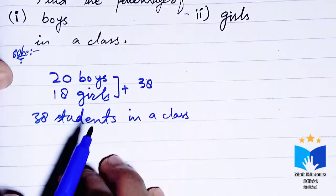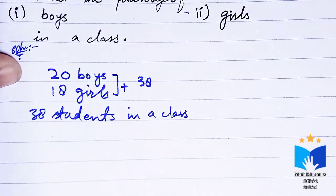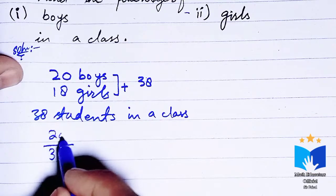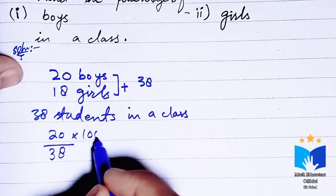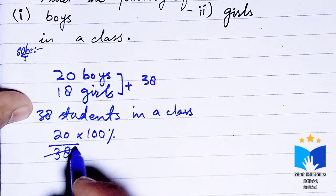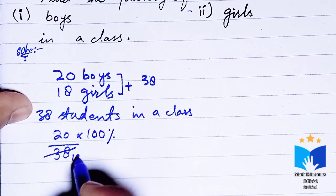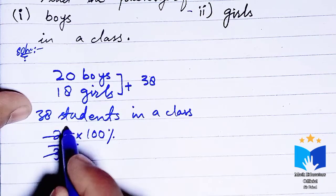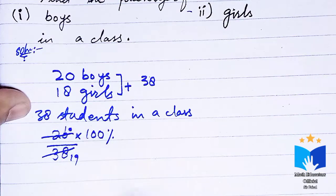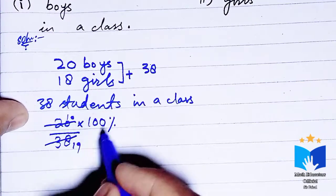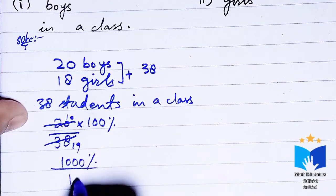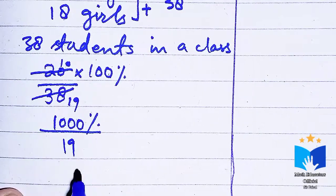Now we need to find the percentage of boys in the class. To do this, we take the number of boys over the total students in the class, which is 20 over 38, then multiply by 100.